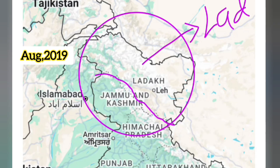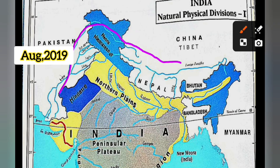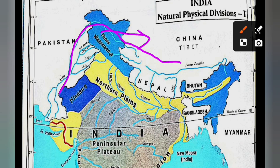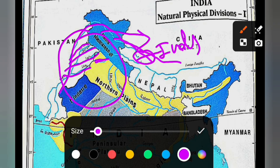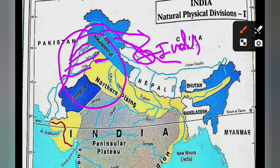The two union territories are the Union Territory of Ladakh and the Union Territory of Jammu and Kashmir. According to your textbook, you should read this region as Jammu and Kashmir. The tributaries of the Indus river are the Jhelum, Chenab, Ravi, Beas, and Sutlej. The Indus flows through Jammu and Kashmir, Punjab, and Himachal Pradesh.